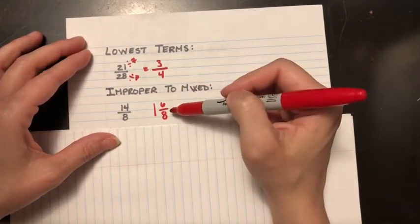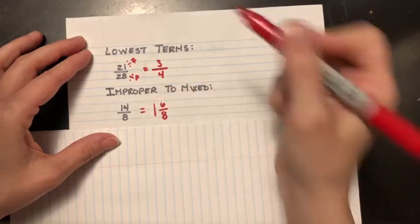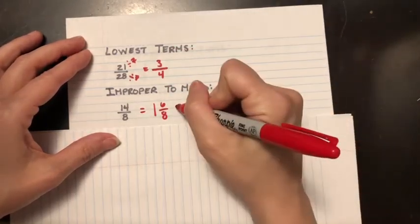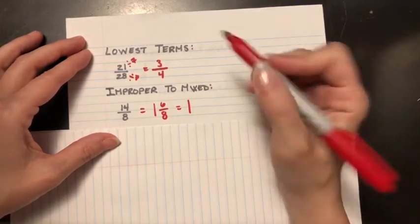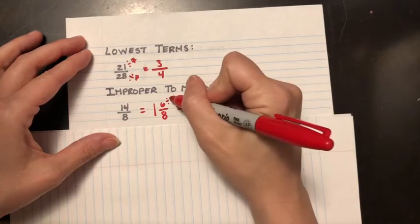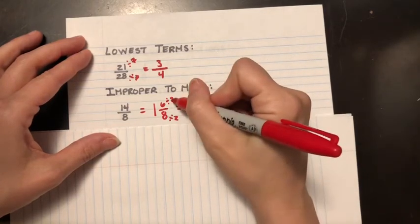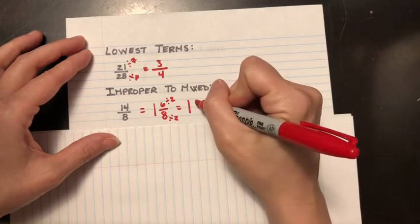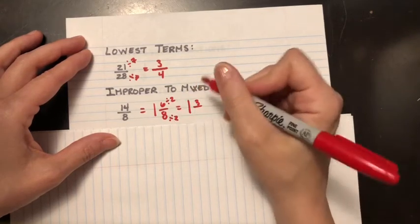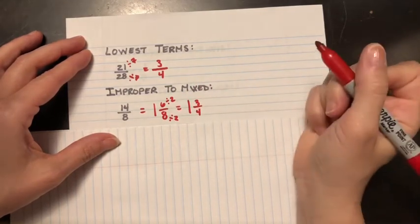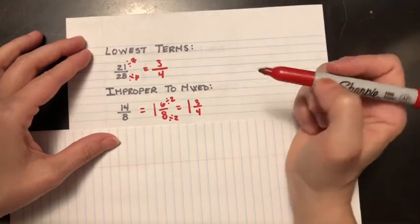All right, 6 over 8. But wait a second, that's not lowest terms. Everything has to be reduced to lowest terms. So I got my one whole, and I can divide this by 2 and that by 2. Six divided by 2 gives me 3, eight divided by 2 gives me 4. And there it is—my lowest terms mixed number.